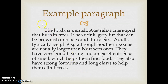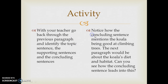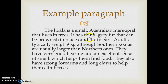Here's an example paragraph about a koala: 'The koala is a small Australian marsupial that lives in trees. It has thick grey fur that can be brownish in places and fluffy ears. Adults typically weigh nine kilograms, although southern koalas are usually larger than northern ones. They have very good hearing and an excellent sense of smell, which helps them find food. They also have strong forearms and long claws to help them climb trees.'